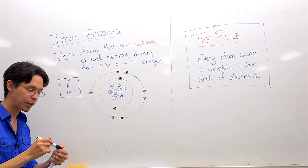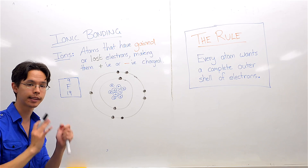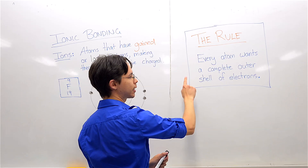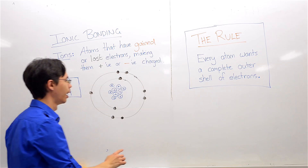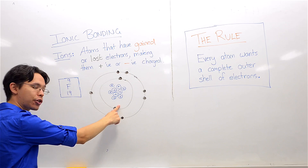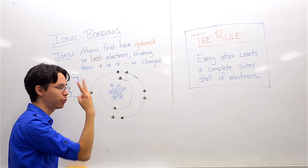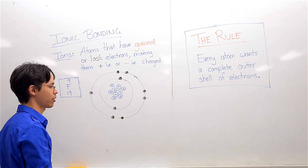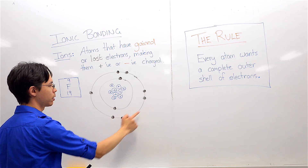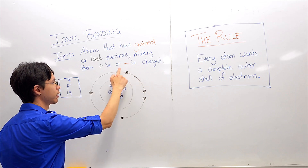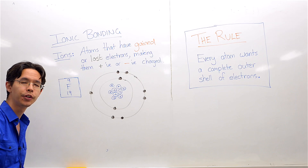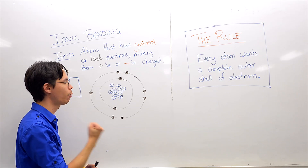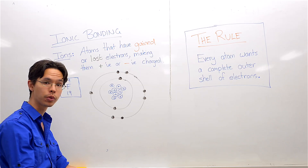Let's examine the rule — is it happy? Is it stable? Every atom wants a complete outer shell of electrons. How many does the first shell hold? A maximum of two — it's full. The second shell can hold a maximum of eight electrons. We've got one, two, three, four, five, six, seven in its outer shell. It just needs one more electron — it would love to get one more.